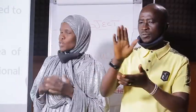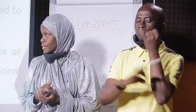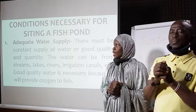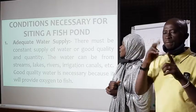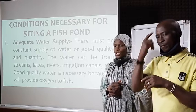Number three, fish farming provides a means of recycling waste. For example, animal dung from the farm — instead of throwing away poultry droppings, you can put them in the pond where they serve as feed to the fish. Kitchen remnants can also be recycled as fish feed. Fish can also be processed into fish byproducts such as fish meal and fish oil. A better use of land and water is also ensured through fish farming. It can generate foreign exchange for the nation when fish are exported to other countries, and it is useful in research work and educational purposes.